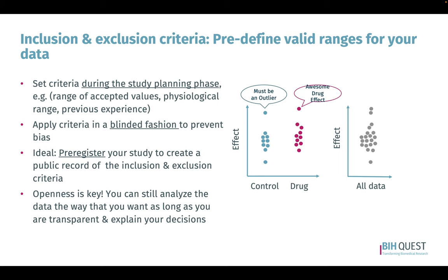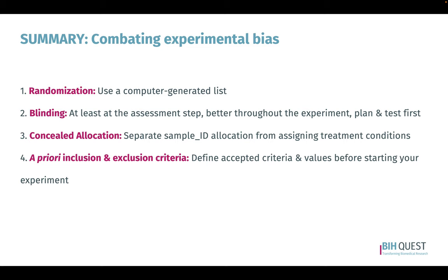To summarize how to combat experimental bias: randomization — use a computer-generated list from the web or Excel; blinding — apply it at least at the assessment step, better throughout the entire experiment, plan it and test it first; concealed allocation — separate sample ID allocation from the assignment of the treatment group and apply them in one step; a priori inclusion and exclusion criteria — define accepted criteria and values before you start your experiment.